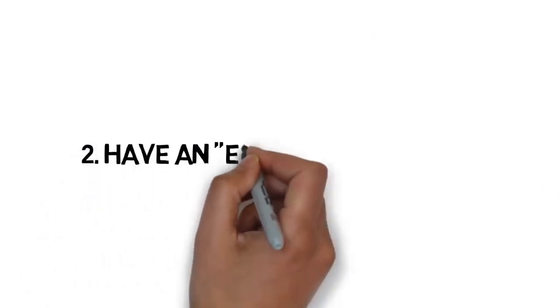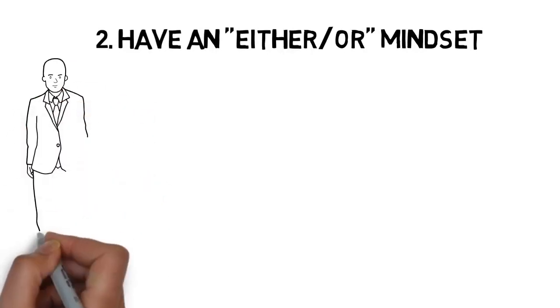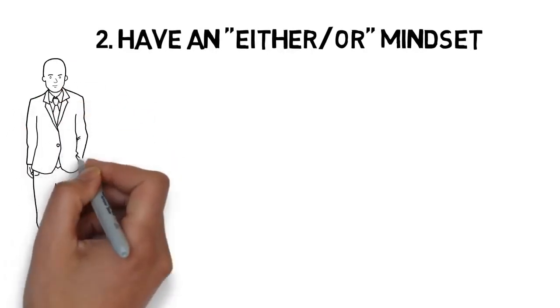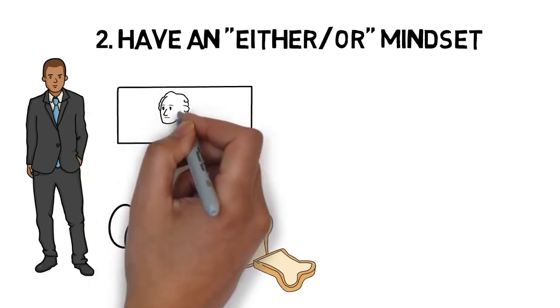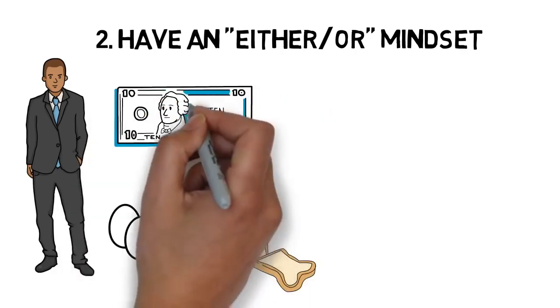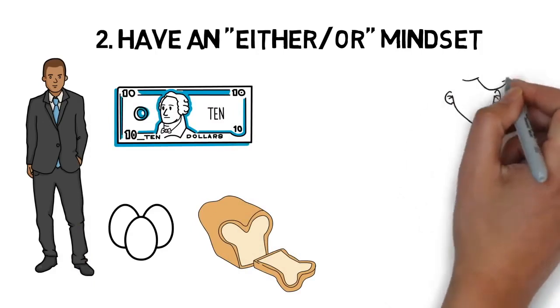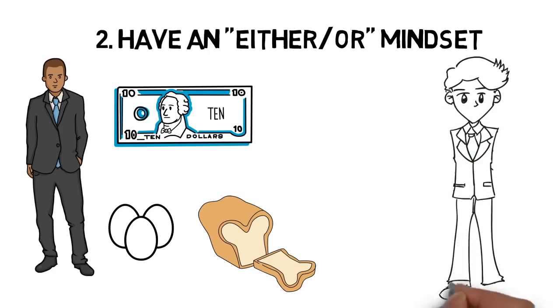2. Have an Either-Or Mindset. Have you ever heard someone say that being rich is a mindset? One of the most important parts of this wealthy mindset is how you tackle problems. Imagine you go to the grocery store and want to buy bread and eggs, but you can only afford to buy one. If you are using the either-or mindset, you have to choose which one to leave behind, because your goal is to not spend more money than you have. Makes sense, right? Believe it or not, most rich people would handle this problem quite a bit differently, because they aren't satisfied with picking one or the other. They want both.